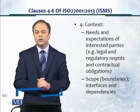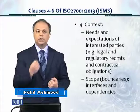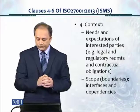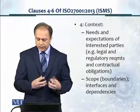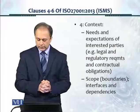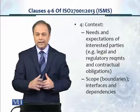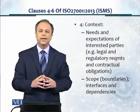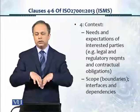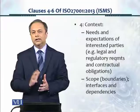In context, we're also asked in clause number four about needs and expectations of interested parties. Interested parties is a term used in 27001, and it could be any party or entity which has a legal, regulatory, or contractual obligation or relationship with our organization which is trying to implement ISMS. We're also asked in clause number four to look at scope, which is the boundaries, interfaces, and dependencies on different entities. Clause number four asks us to understand the context of the organization with respect to stakeholders, dependencies, and linkages.